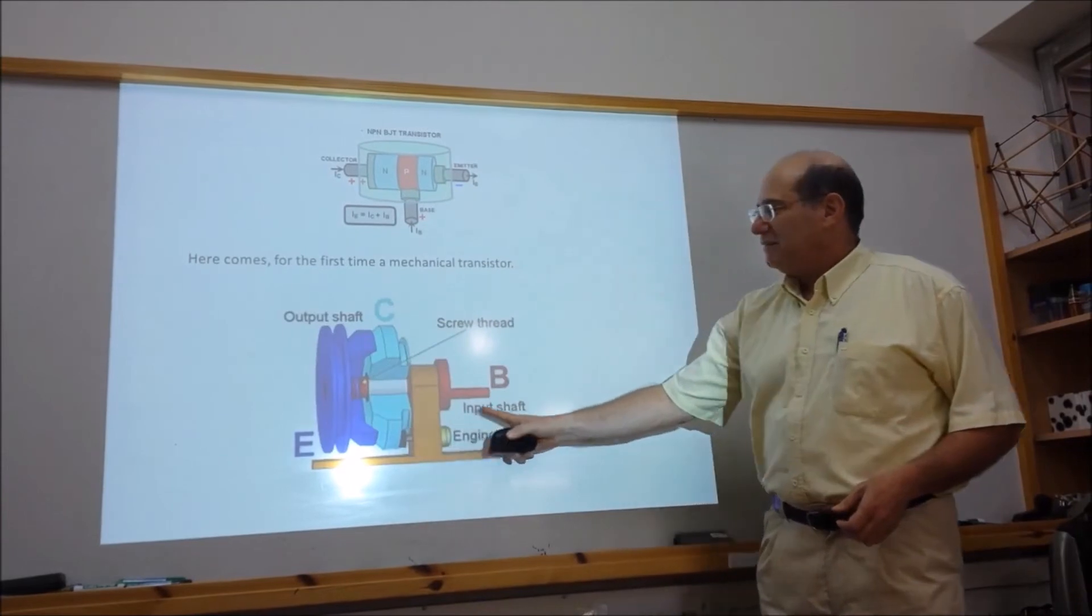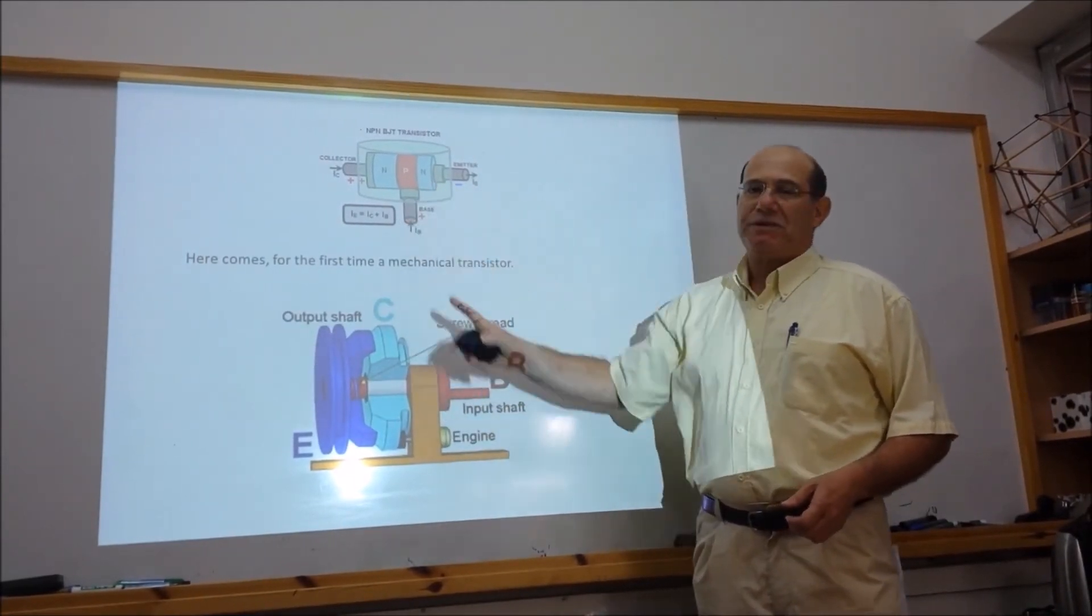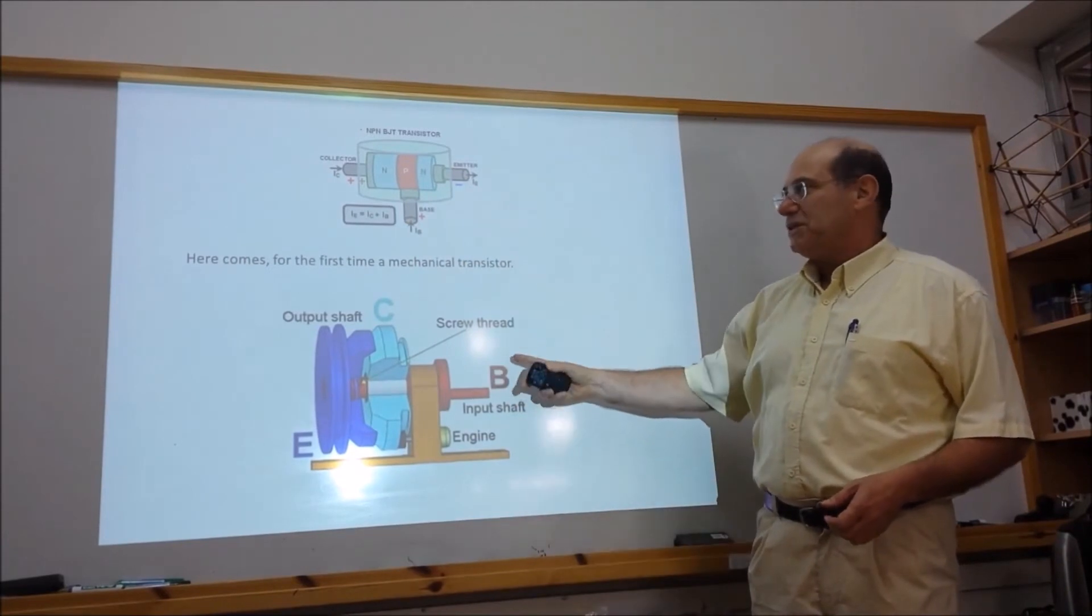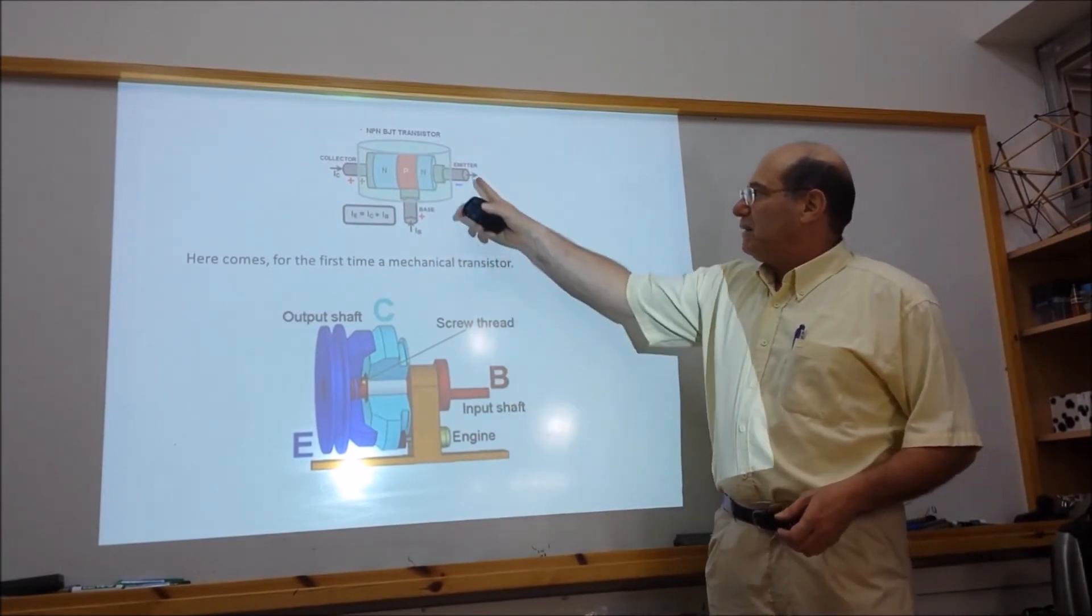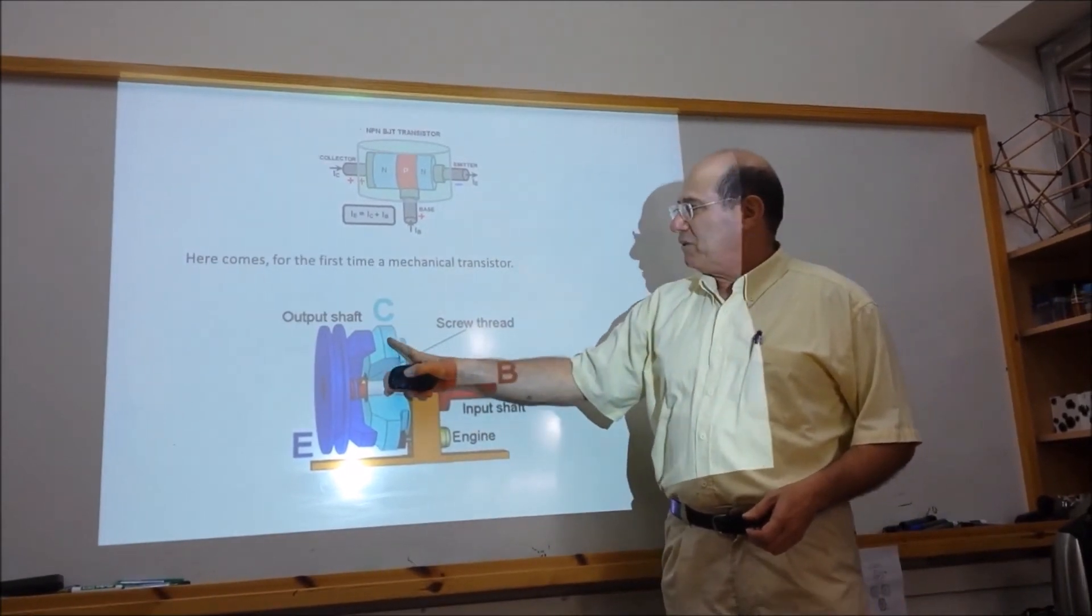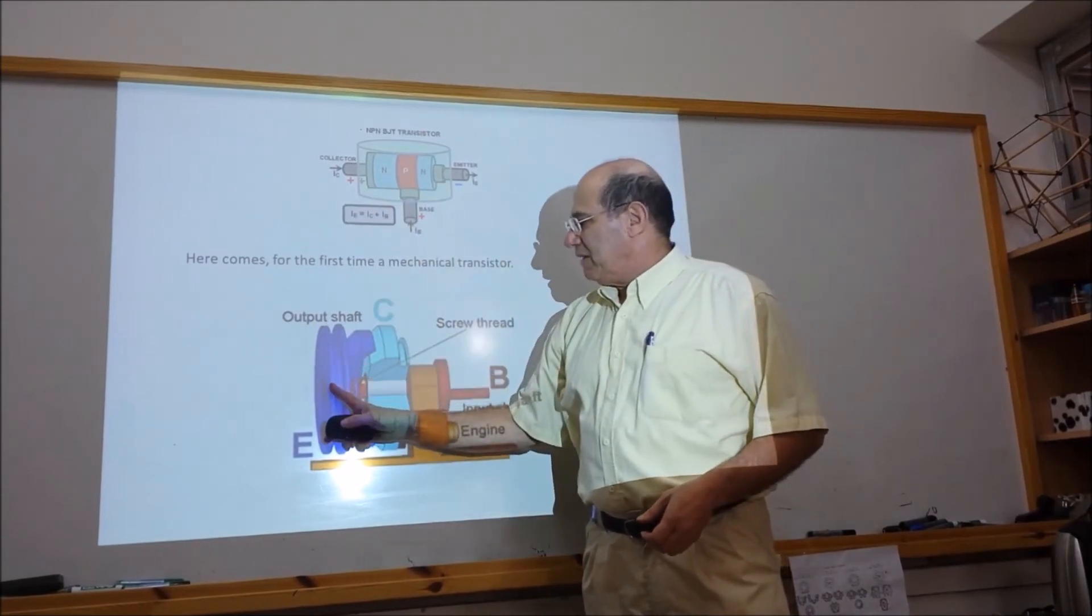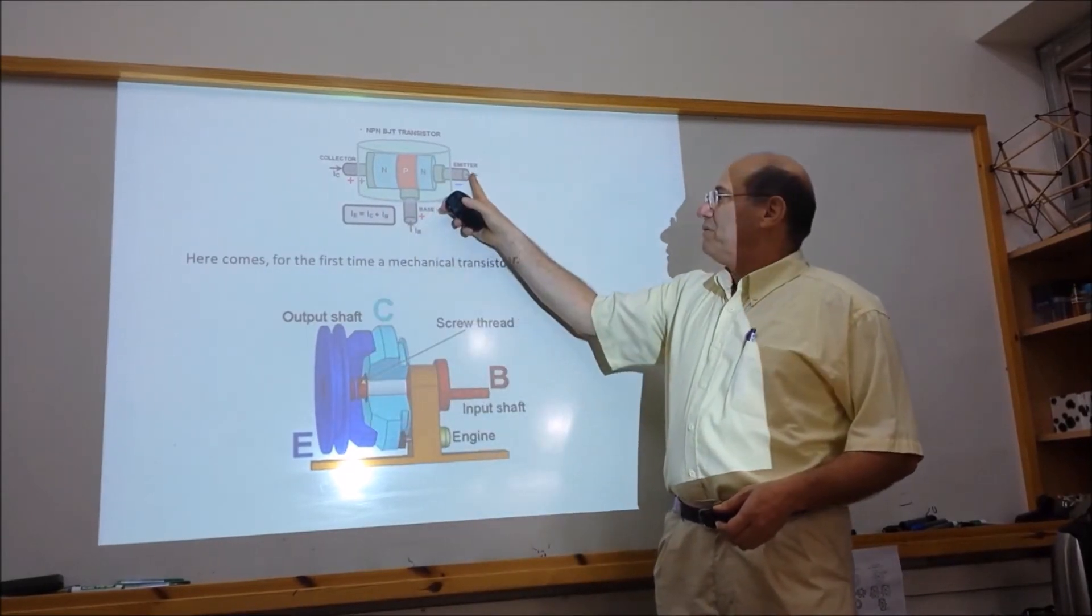We can see here the mechanical transistor and the electronic transistor. Topology is the same. Three elements. Here we have the base, here we have the link base, here we have the collector, here we have the emitter.